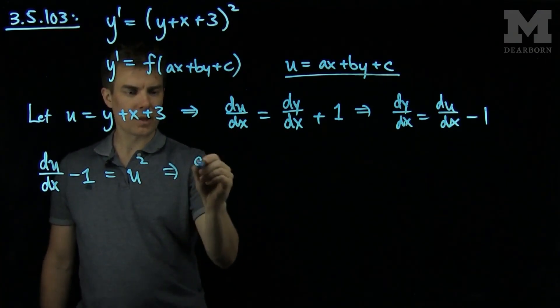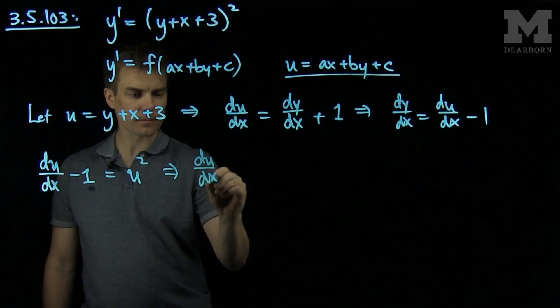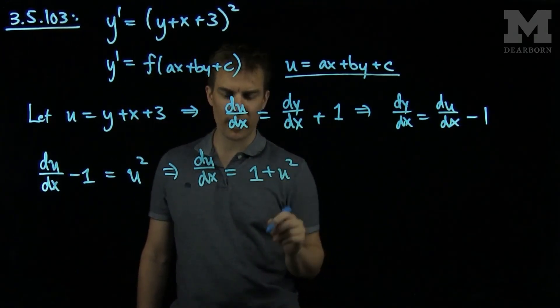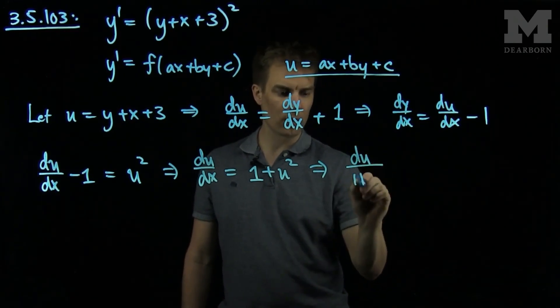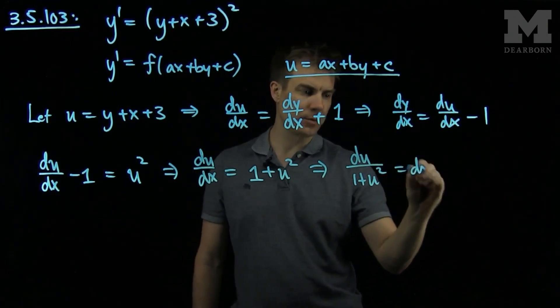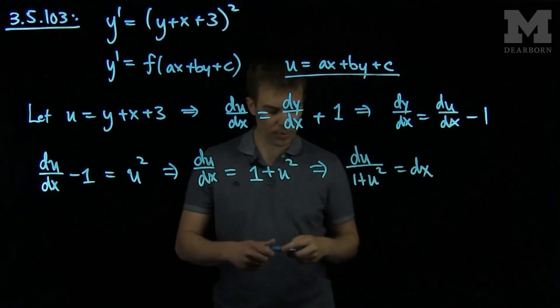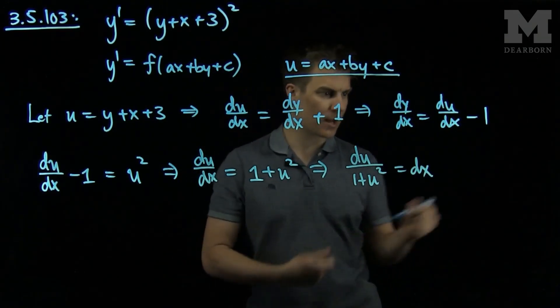So now this tells me that du/dx is 1 plus u squared, which is equivalent to du over 1 plus u squared equals dx. And I've turned the problem into a separable differential equation. So now the problem is separable.